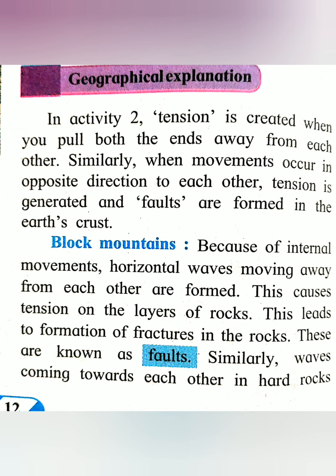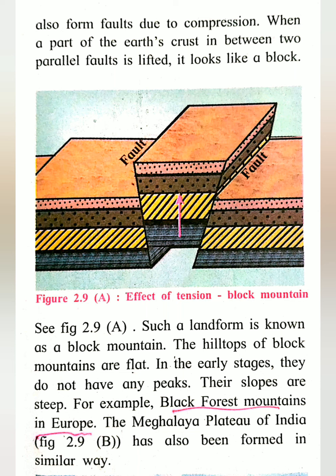Faults are fractured and cracks develop in them. When a part of the earth's crust between two parallel faults is lifted, it looks like a block — hence this mountain is called a block mountain. You can see in the picture how the middle part is uplifted and looks like a block. The hilltops of block mountains are flat, and in the early stage they do not have any peaks.